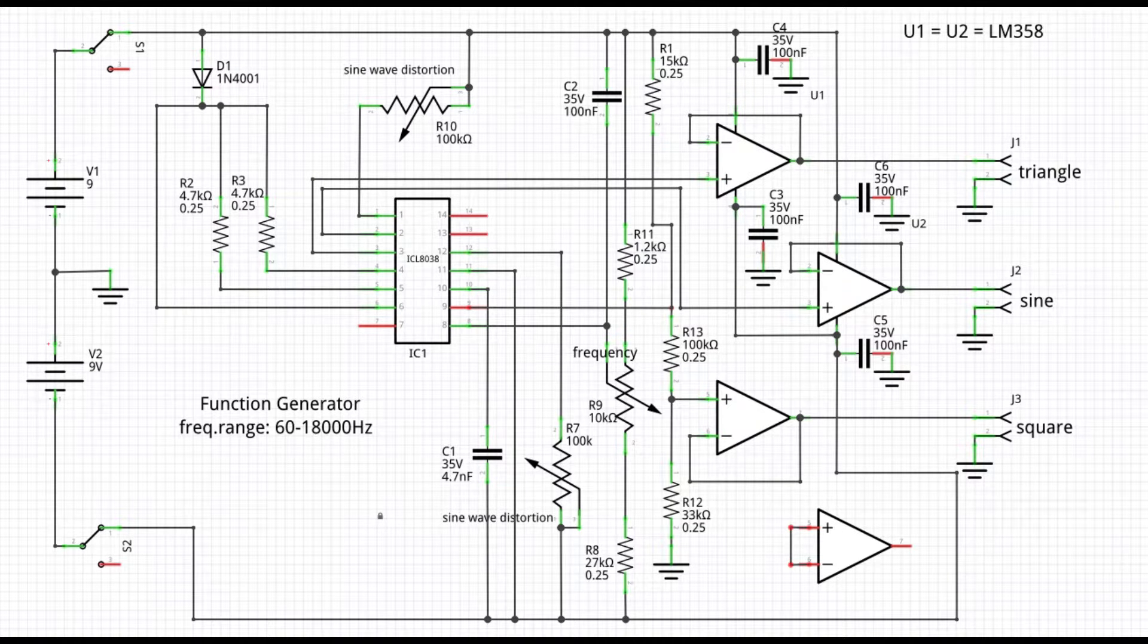Here is the schematic of our economic function generator. The circuit is built around the ICL 8038, which is a voltage controlled oscillator capable of providing simultaneously three waveforms: sine, square and triangular.